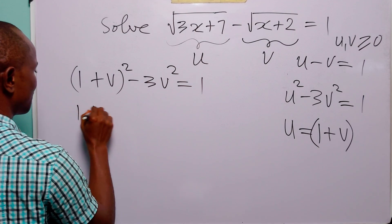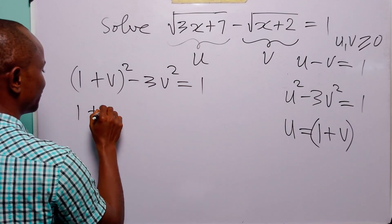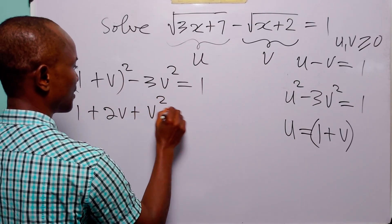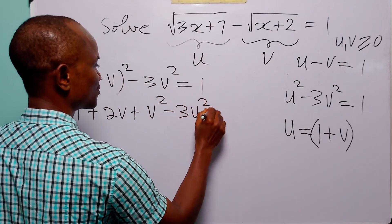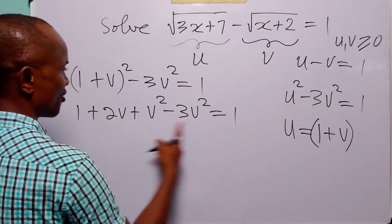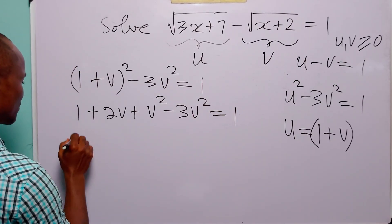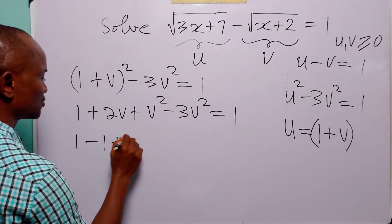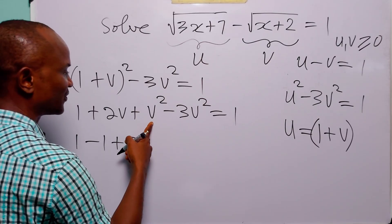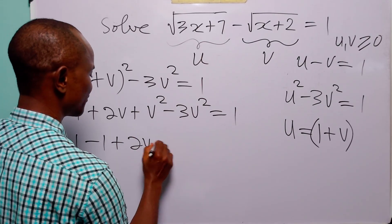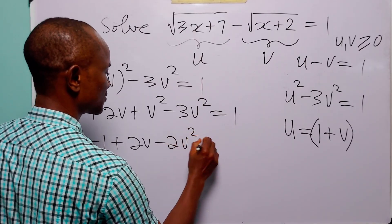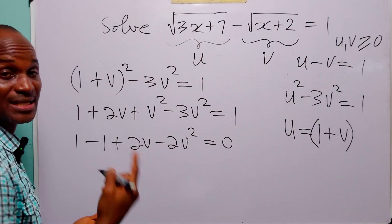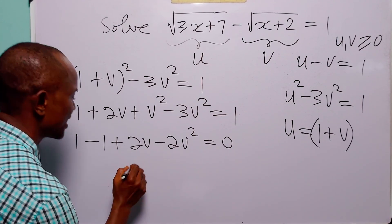Opening the bracket, we have 1 plus 2v plus v squared minus 3v squared is equal to 1. Rearranging, we have 1 minus 1 plus 2v, and v squared minus 3v squared gives us minus 2v squared, and everything equals zero. Since 1 minus 1 equals zero, we are left with 2v minus 2v squared equals zero.